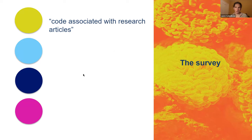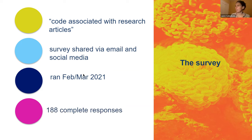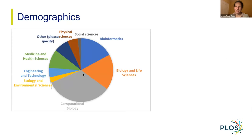When we talk about code sharing in this context, the phrasing we used was 'code associated with research articles.' We left it slightly vague so respondents could think about the code shared alongside articles within the context of their own research — we didn't want to be too prescriptive to keep the survey as broad in scope as possible. The survey was shared via email and social media and ran in February and March last year, generating 188 complete responses.